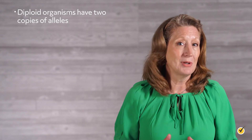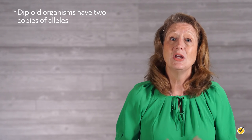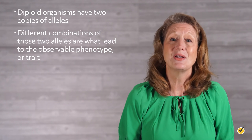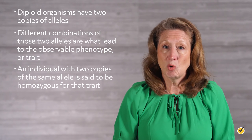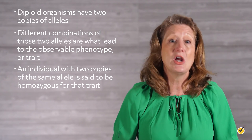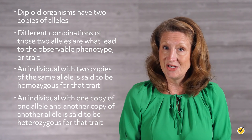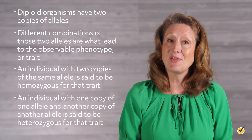Now let's bring everything together and look at how genotypes and phenotypes actually affect inheritance. Remember that being a diploid organism means you don't have just one copy of an allele to contend with — you have two. Different combinations of those two alleles are what lead to the observable phenotype or trait. An individual with two copies of the same allele is said to be homozygous for that trait, and an individual with one copy of one allele and another copy of another allele is said to be heterozygous for that trait.